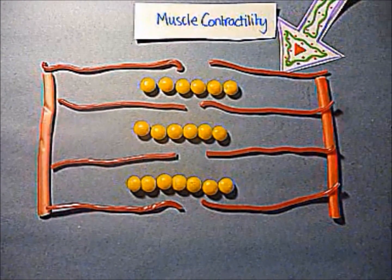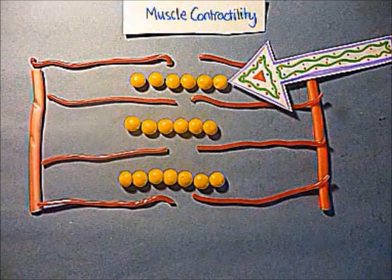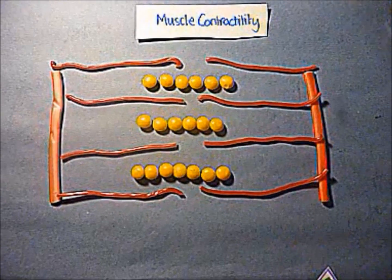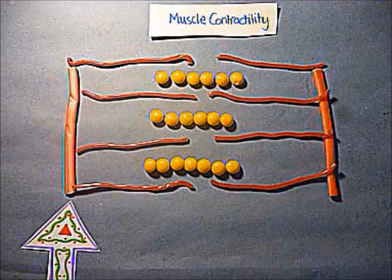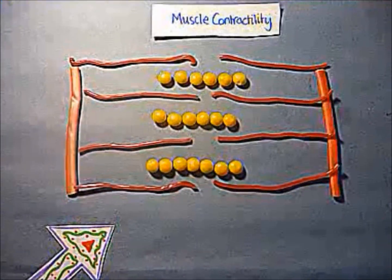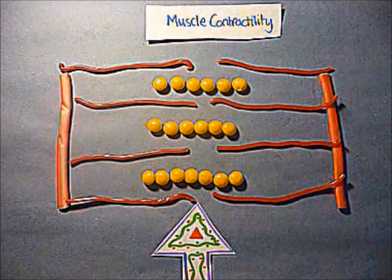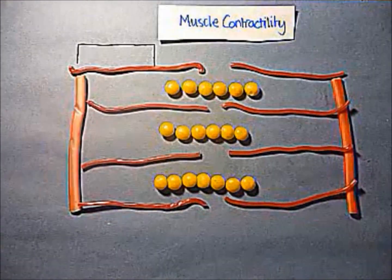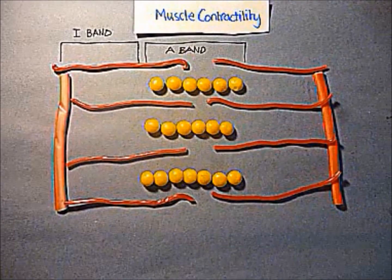Individual sarcomeres contain actin and myosin fibers. Sarcomere units contain Z lines and an H zone in the middle. The H zone and I bands are at maximum when the muscle is relaxed. The A band remains unchanged during muscle activity.